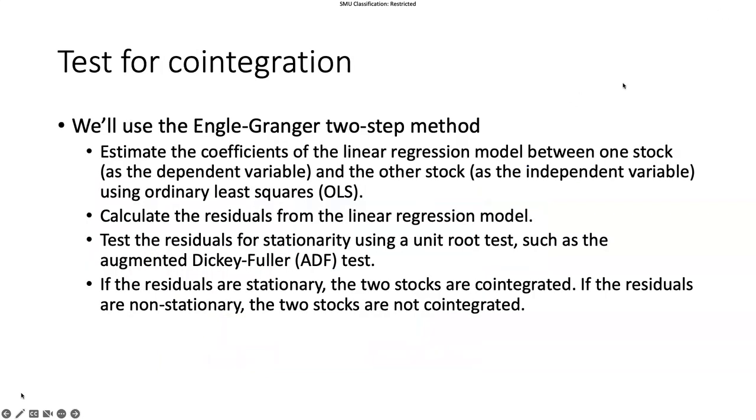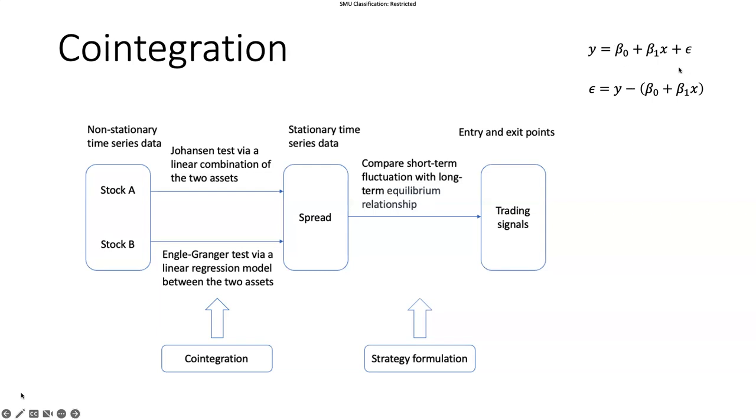So that's in a nutshell about cointegration. Here I listed two formulas for linear regression. In linear regression, we're assuming a fixed linear relationship. The entities of interest are two variables. Y represents our target variable, which could be the stock price of one stock. And we have another variable called the independent variable, representing another stock price. So we have two series here.